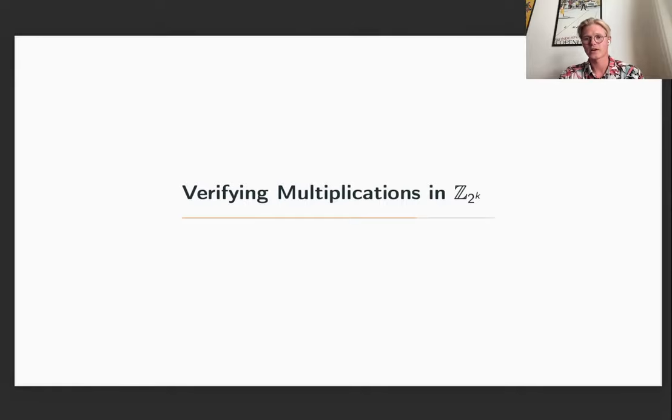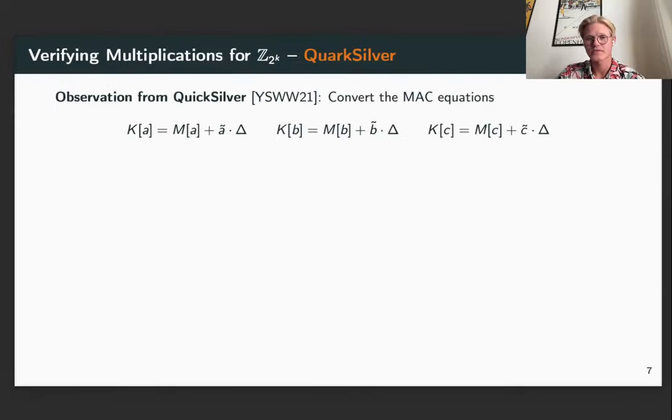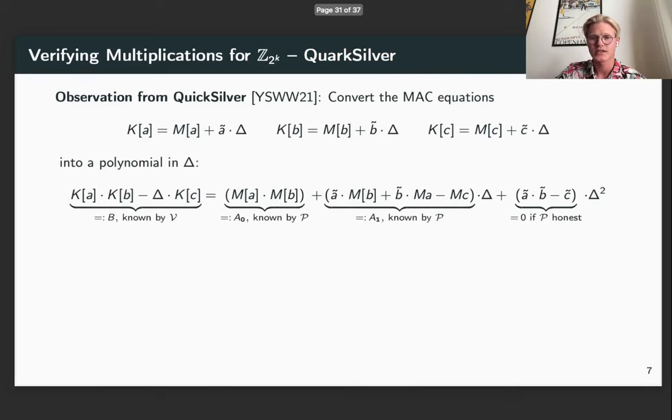We also provide a way of verifying multiplications in Z2K efficiently. This stems from an observation from Quicksilver where you can convert the MAC equations of a multiplication triple A, B and C into a polynomial in delta instead. Now the perks of having this as a polynomial in delta means that you have a linear relationship between multiple of these multiplication triples.